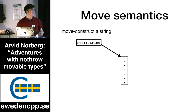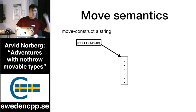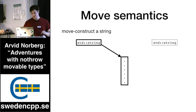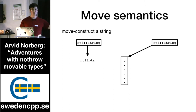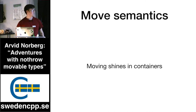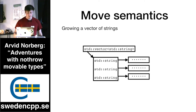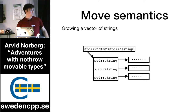As most of you know, the typical way move semantics can be thought of is: imagine you have a string, it holds a character array somewhere, you want to move this string. You're about to move-construct a new string, you move the pointer over, you make the original string point to a null pointer, and then you're done.